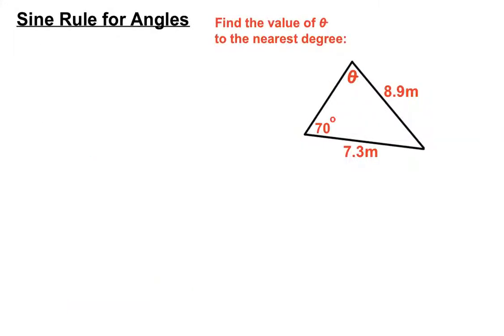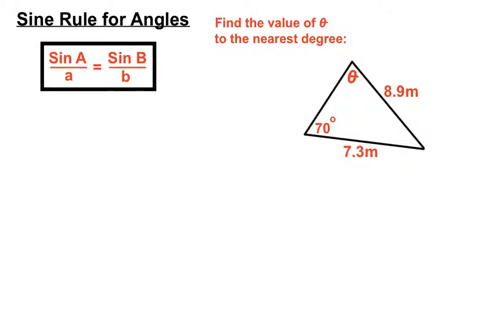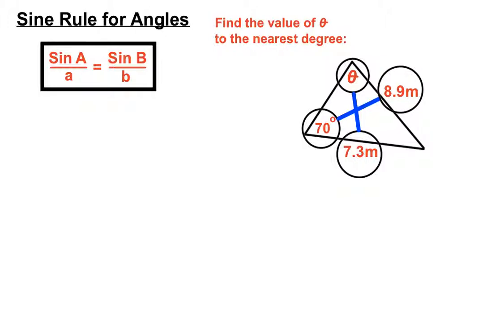Let's look at our first example: find the value of theta. Theta is a symbol representing a missing angle whose size we don't know yet, to the nearest degree. That theta angle is closely related to its opposite side of 7.3 metres. The angle of 70 degrees is related to the side opposite it, so sine 70 degrees is closely related to 8.9 metres. That's the basis of filling out this particular sine rule for angles formula.